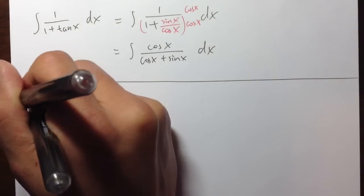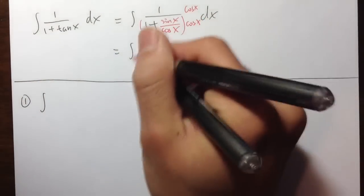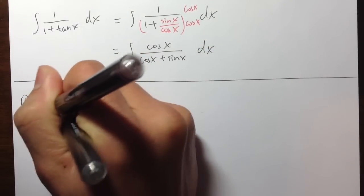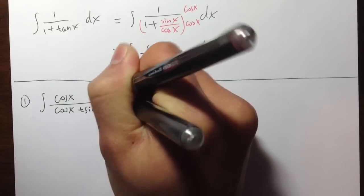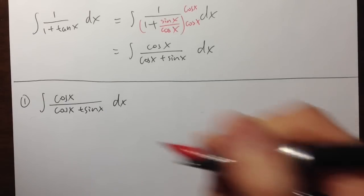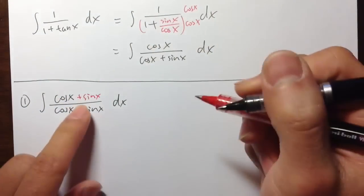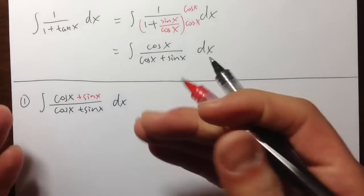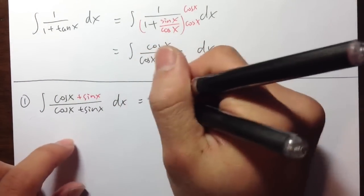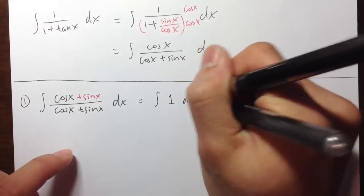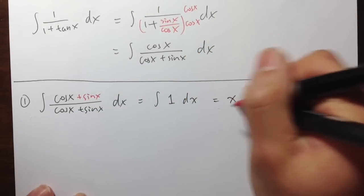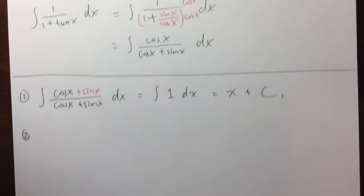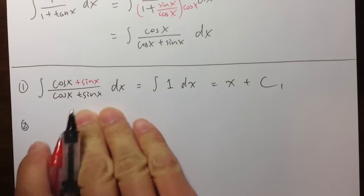The first one I'd like to talk about, compared to the original integral, I have cosine x over cosine x plus sine x. Wouldn't it be nice if I also had plus sine x on the top? Well, that would just be one step, because the top and bottom turn out to be the same — they cancel, and you get 1. So the integral of 1 dx gives you just x plus c1.